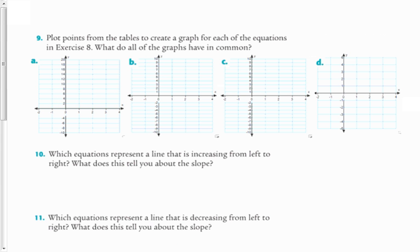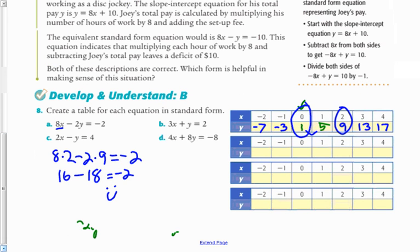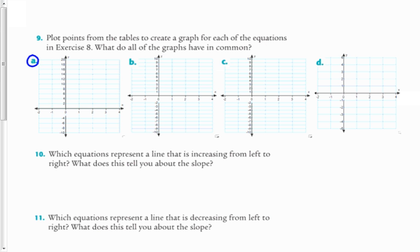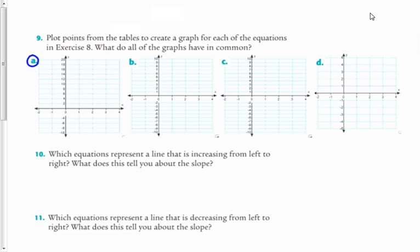The next thing I'm going to do is graph that table. I'll plot the points using ideas I already know about linear equations. I'll start by plotting the y-intercept at (0, 1), then (1, 5), and (2, 9). The y-intercept is at zero one, the next point is one five — over one, up five — and the next is two nine. I can see the pattern, continue it, and just draw the line.